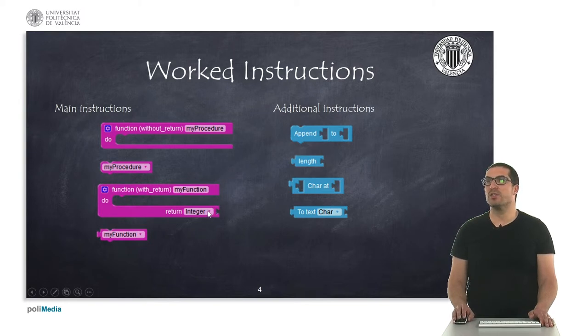Specifically for functions, we can indicate also the return type here that we want. As you can see here, the difference between a procedure and a function is that a function has an output connector and returns a value, while the procedure does not return anything.